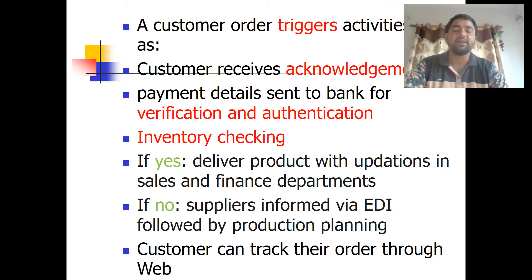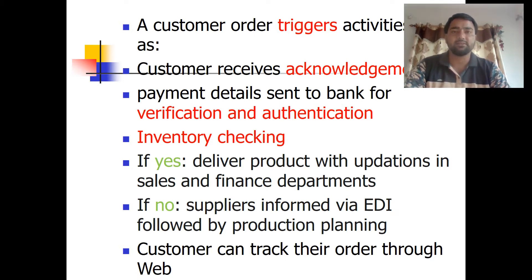If no inventory is available, suppliers are informed about the product through the Electronic Data Interchange (EDI) mode. The supplier then contacts the production department to produce and deliver the product. The customer can track their order via the web using a complete reference number, which shows whether the order has been dispatched, where it has reached, and when it will be delivered.